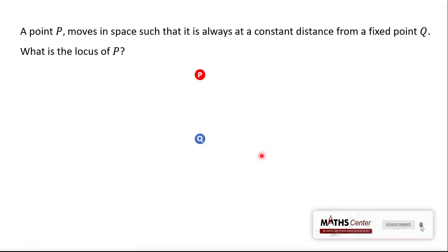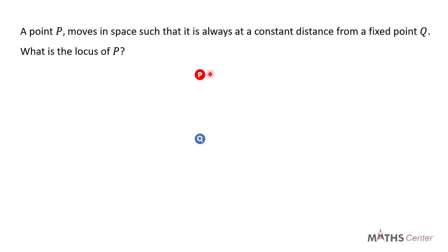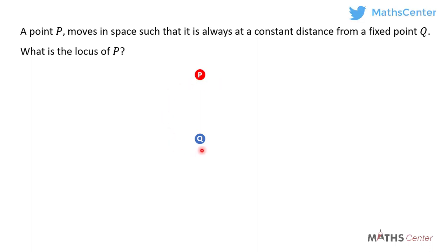Let's go over the question again. We have two points: point P and point K. Point K is a fixed point so it does not move, but point P can move. It can only move under the condition that it should always be at a constant distance from point K. As point P moves, it is going through a path, and the question wants us to find that path.